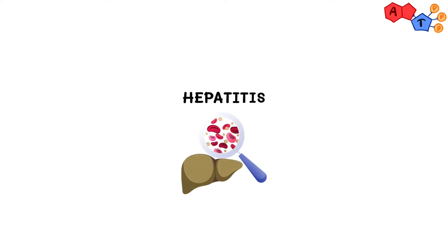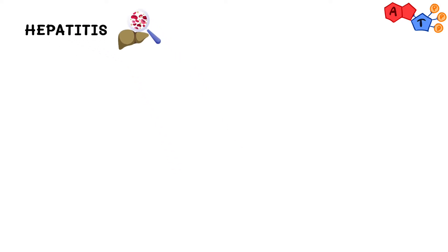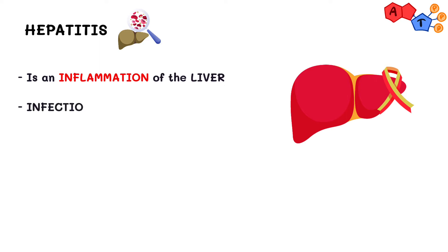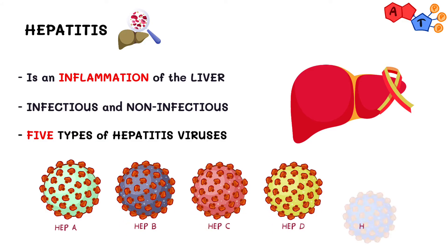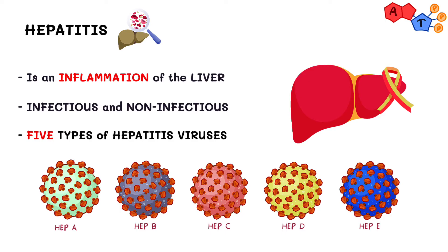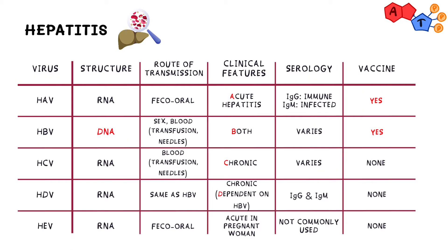Welcome back to another video. This video deals with one of the most intimidating topics in microbiology — at least some people think so. There are a lot of things to know for each of the hepatitis viruses, but the good thing is that it's very conceptual and you don't need to memorize much. As the name implies, hepatitis is inflammation of the liver, which can happen due to many infectious and non-infectious etiologies. This table highlights the main things you should know for each virus — don't worry about it now, we'll cover everything and come back to it at the end.